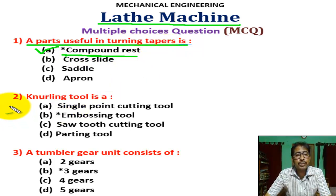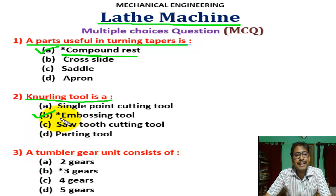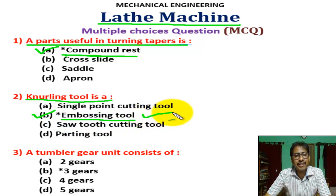Question number two: knurling tool is? There are four options. Correct answer is B — embossing tool. That means it is used to produce a rough surface.